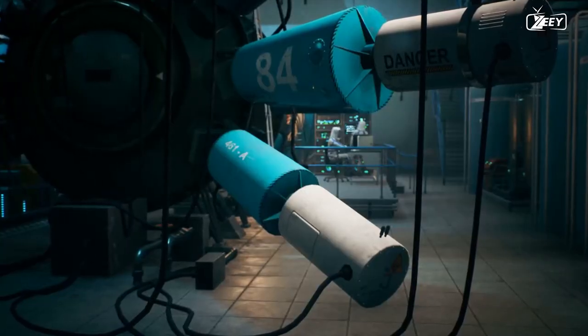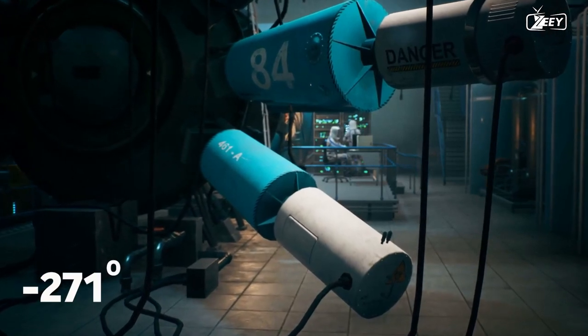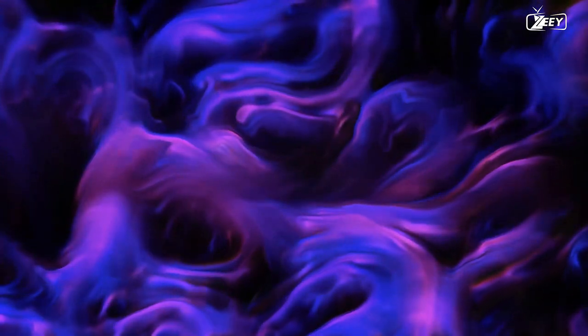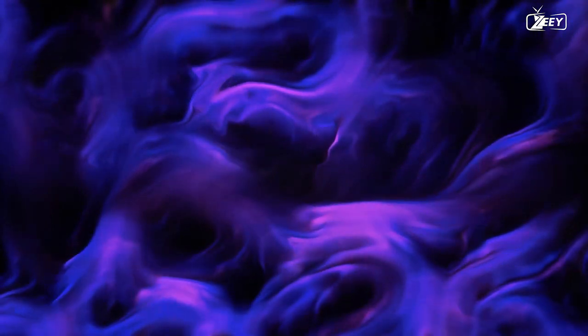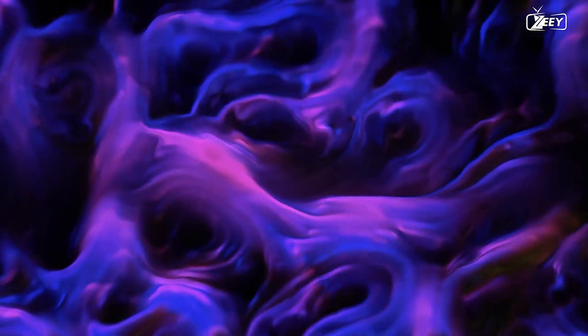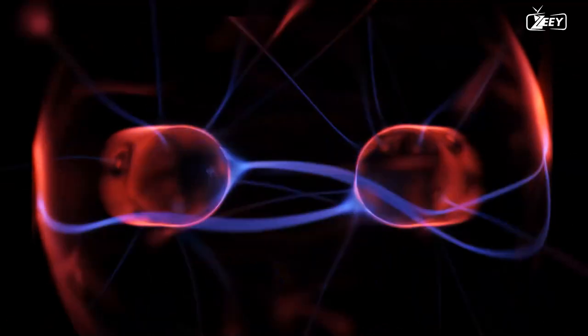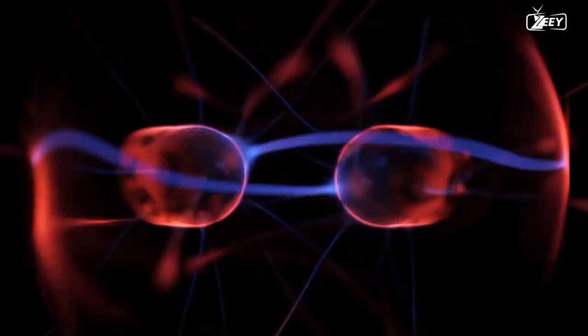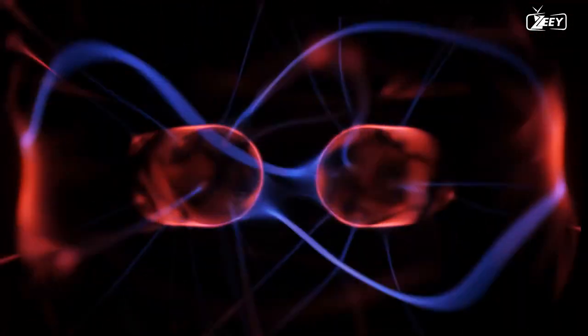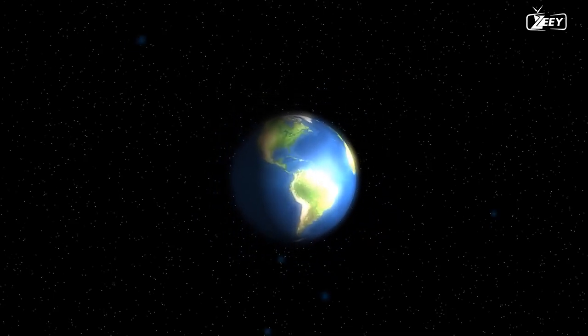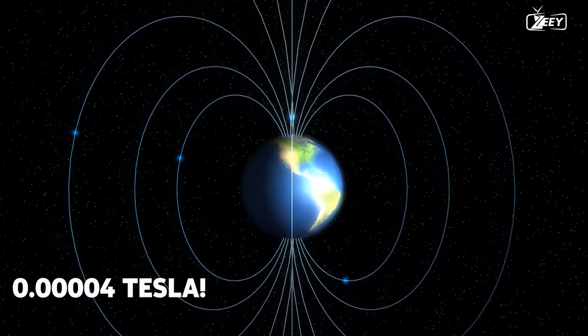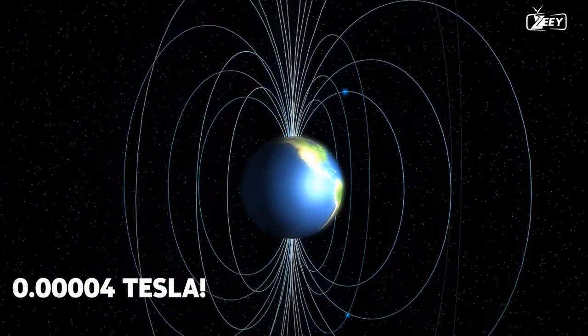This is only possible by keeping them at extremely low temperatures, in this case, around minus 271 degrees. This is why they must be constantly chilled with liquid helium to achieve such severe temperatures. The magnetic fields created by these powerful magnets have an intensity of 8 tesla. For comparison, the Earth's magnetic field has an intensity of 0.00004 tesla.